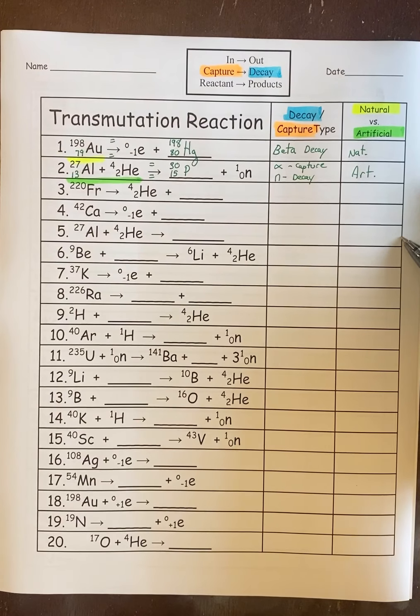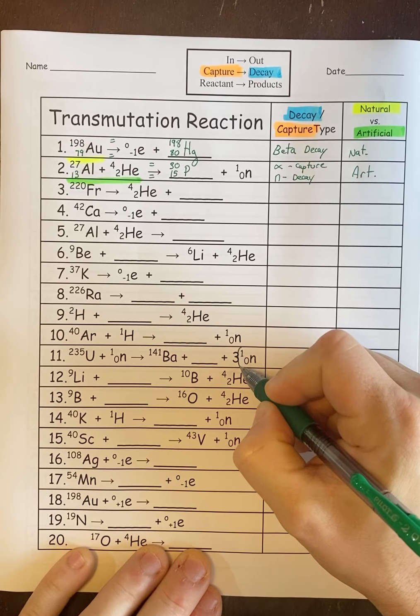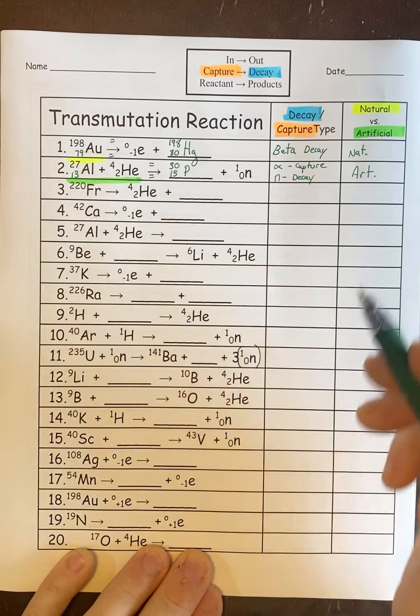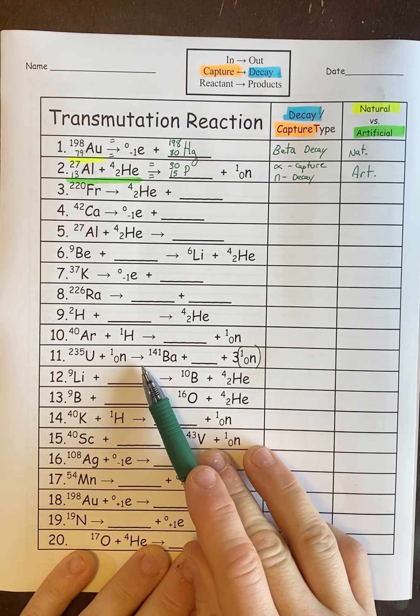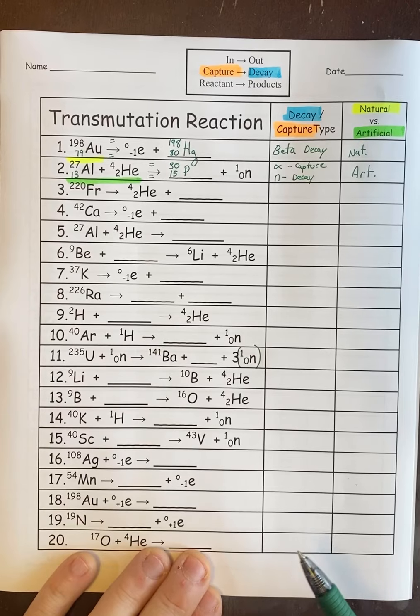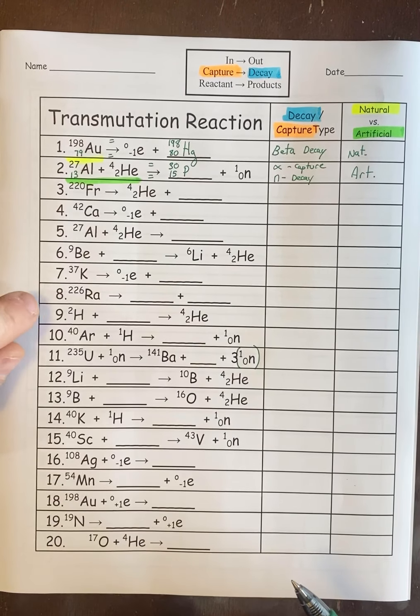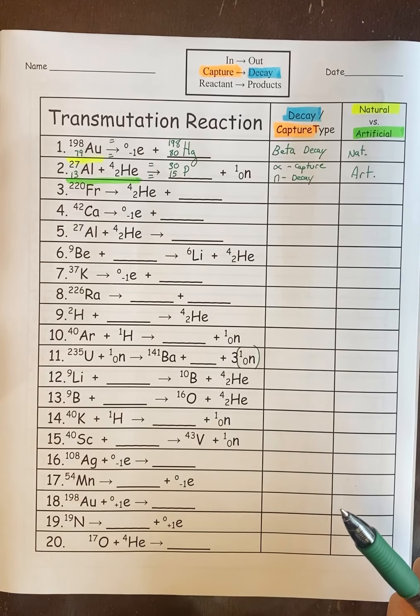A couple things you need to be aware of when you go down to number 11. See how there's a big three in front of the neutron? What that really means is that you have three neutrons. So you can think of it like U plus a neutron becomes a barium plus a blank plus a neutron, a neutron, and a neutron. So when you do your math be aware of that. And then everyone has trouble with number 8. They say how can I possibly do that? There's two blanks. That's what I'm going to show you next.